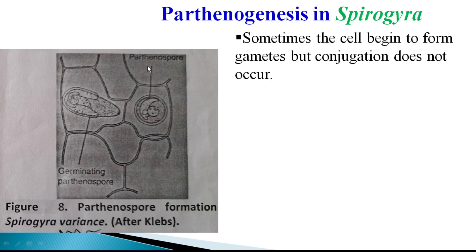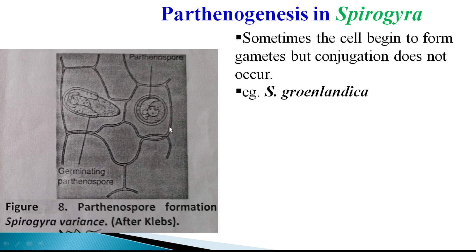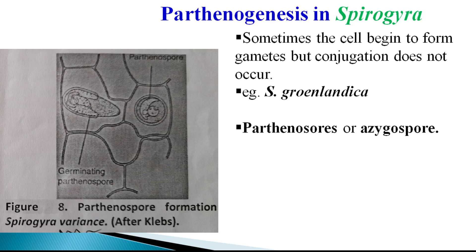That spore-like structure is called a Parthenospore. Such cases have been reported in species like Spirogyra graenlandica. In such cases, the conjugation papillae are linked to each other — you can see that the papillae are linked — but no conjugation tube is established. The protoplasts in the conjugating cells round off, secrete a wall around themselves, and before the double wall between the conjugation papillae dissolves, these rounded structures behave like spores.